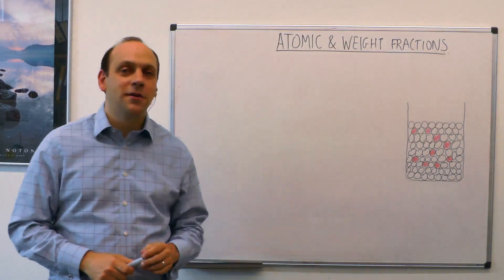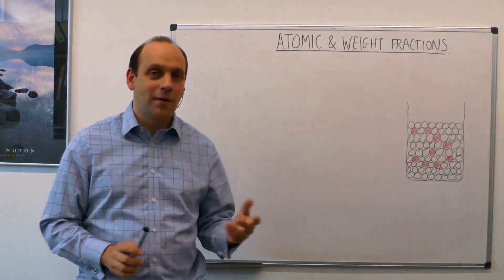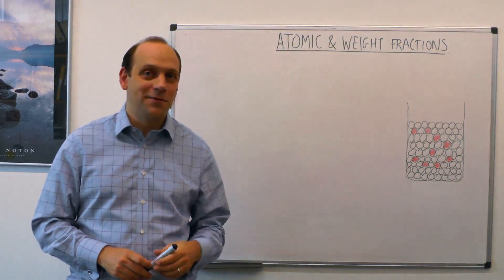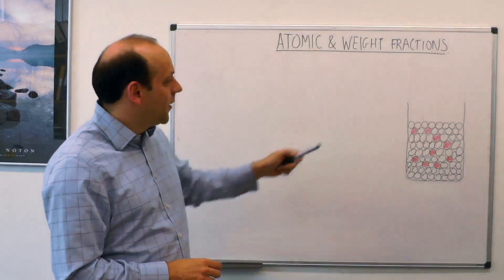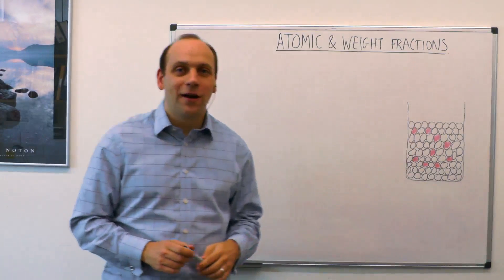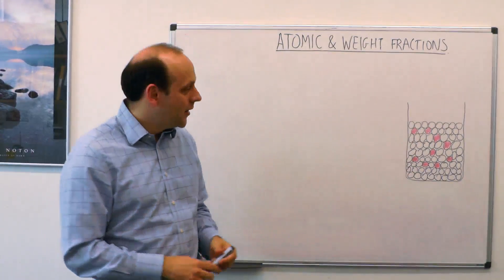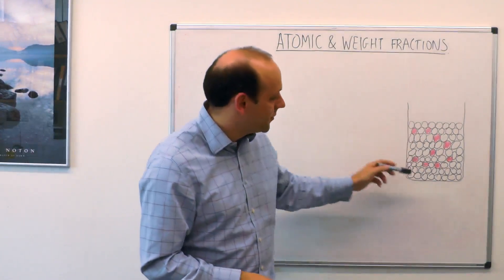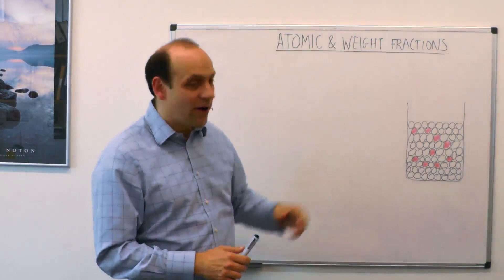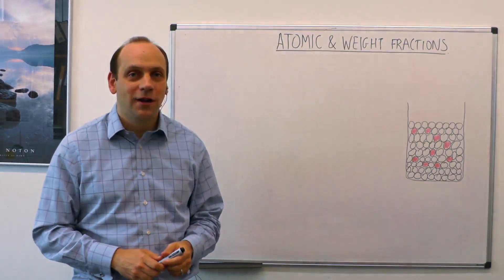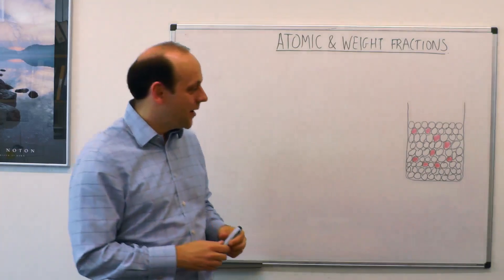We're going to do a bit of maths to persuade ourselves that we can do that, and then we'll introduce the data book which will tell us we don't need to remember a formula. If we consider a bucket of an alloy with lots of different atoms in, different colored balls, this bucket has some black balls and some red balls. If we know the number fraction, the atom fraction of each, then we can consider how much they weigh.